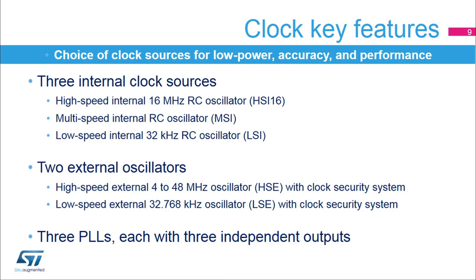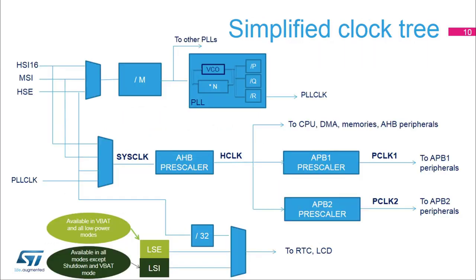STM32L4 devices embed three phase-locked loops, each with three independent outputs for clocking different peripherals at different frequencies. The system clock can be derived from the HSI16, the MSI, or the HSE. The AHB clock, called HCLK, is derived by dividing the system clock by a programmable pre-scaler. The APB clocks, called PCLK1 and PCLK2, are generated by dividing the AHB clock by programmable pre-scalers.